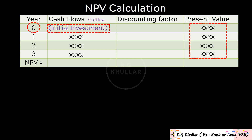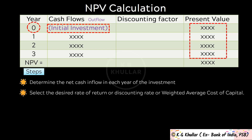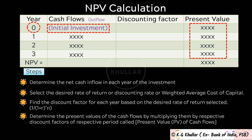You add all these present values to get the net present value. The steps of NPV are: first, determine the net cash inflow in each year of the investment. Second, select the desired rate of return or discounting rate or weighted average cost of capital. Third, find the discount factor for each year — that is 1 divided by 1 plus R raised to the power N. Fourth, determine the present values by multiplying cash flows with respective discount factors. Finally, arrive at net present value by adding all the present values.